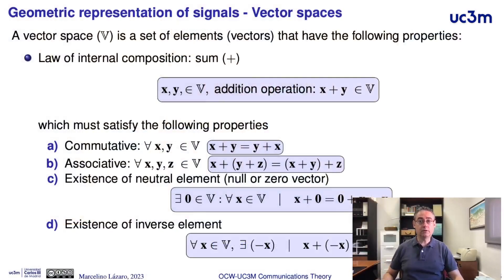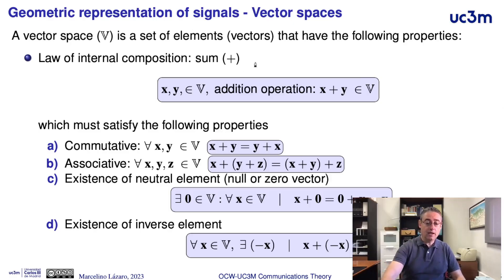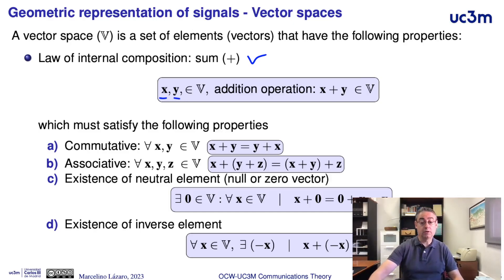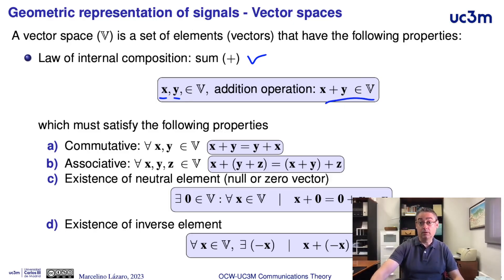Let's start with a revision of vector spaces. A vector space is a set of elements, called vectors, that have the following properties. It is necessary to define a law of internal composition — the addition, or sum — where this composition applied to a couple of vectors will produce the sum of these two vectors, which is another vector.